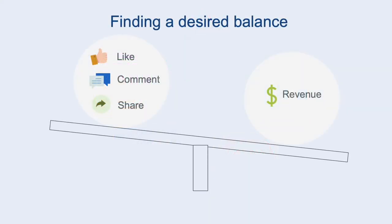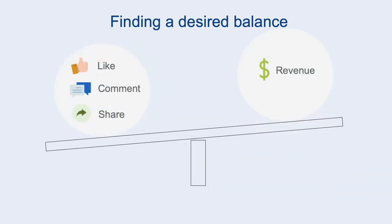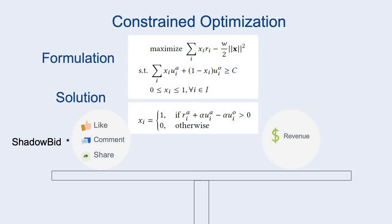Engagement and revenue utilities are both important to the business, but they are not directly comparable. In this paper, we show how to rank organic content and sponsored content together and strike a desired balance using a constrained optimization formulation. This formulation maximizes revenue across all impressions such that total engagement is greater than or equal to some constant value. Using Lagrangian duals, the primal solution is obtained by associating a shadow price alpha to the engagement utility to compare against the revenue utility.